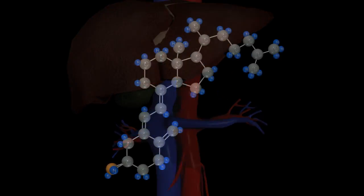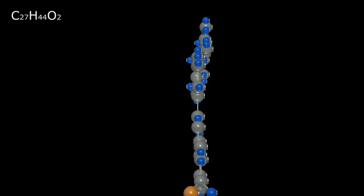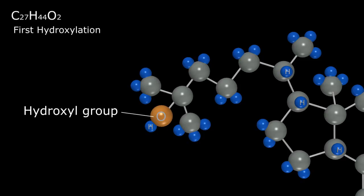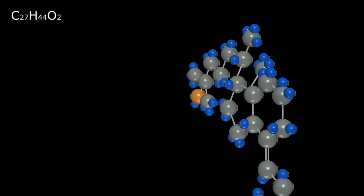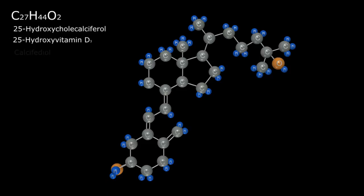Here in the liver, an oxygen atom is added to the 25th carbon, changing the chemical formula to C27H44O2. Notice that, despite the additional atom, all chemical binding rules are maintained with four connections to the carbon atom, one to the hydrogen, and two to each of the oxygen atoms. An oxygen and hydrogen together is called a hydroxyl group and therefore, this process is referred to as the first hydroxylation of the vitamin D molecule. The new molecule is known as 25-hydroxycholecalciferol, 25-hydroxyvitamin D3, or calcifidiol.